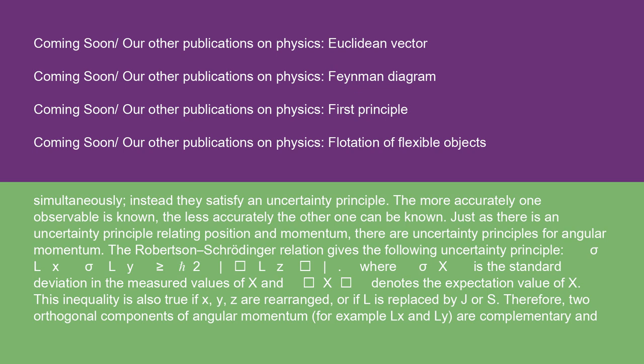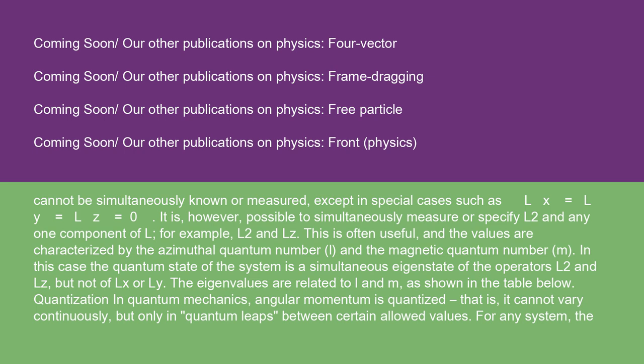Therefore, two orthogonal components of angular momentum, for example Lx and Ly, are complementary and cannot be simultaneously known or measured, except in special cases such as Lx = Ly = Lz = 0. It is, however, possible to simultaneously measure L² and any one component of L, for example L² and Lz. This is often useful, and the values are characterized by the azimuthal quantum number l and the magnetic quantum number m. In this case the quantum state is a simultaneous eigenstate of L² and Lz, but not of Lx or Ly. The eigenvalues are related to l and m as shown in the table below.